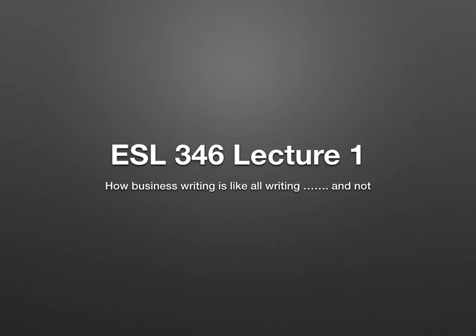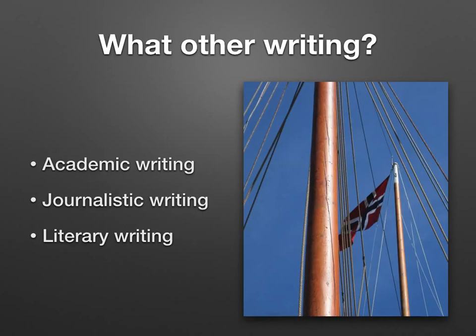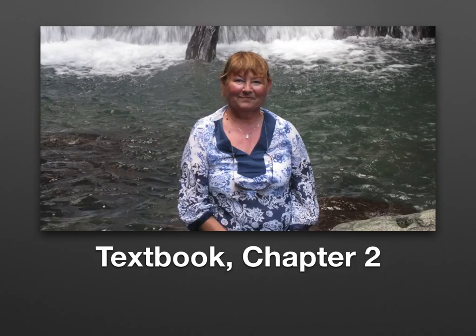In this short lecture I will go over some of the main ways in which business writing is similar to and different from other types of writing with which you may be familiar. When I talk about other writing, I'm referring to the kind of writing you normally do in college, frequently called academic writing. Other kinds of writing are, for example, journalistic writing, such as writing for a newspaper or for other media, or literary writing in which your aim is to tell a story. This lecture is based in part on chapter 2 in your textbook, pages 7 to 35.